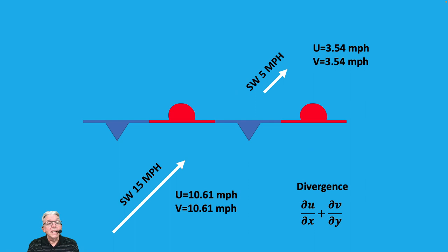And so, again, you've got convergence going on, even though the wind directions are identical. Why? Because you have 15-mile-an-hour worth of wind piling into 5 miles an hour worth of wind, and so the air is piling up. And you're still getting convergence, even though the directions are exactly the same.